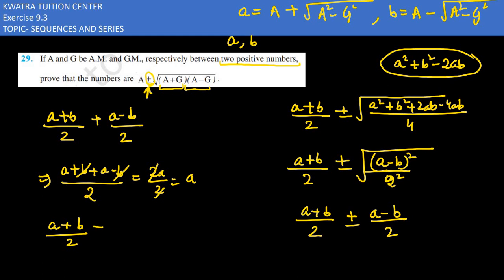A plus b over 2 minus a minus b over 2. Now take the LCM, LCM would be 2. A plus b minus a plus b, a cancels. What do you have left? 2b over 2, which is b. So the number a came, the second number b came, and that would be your answer.